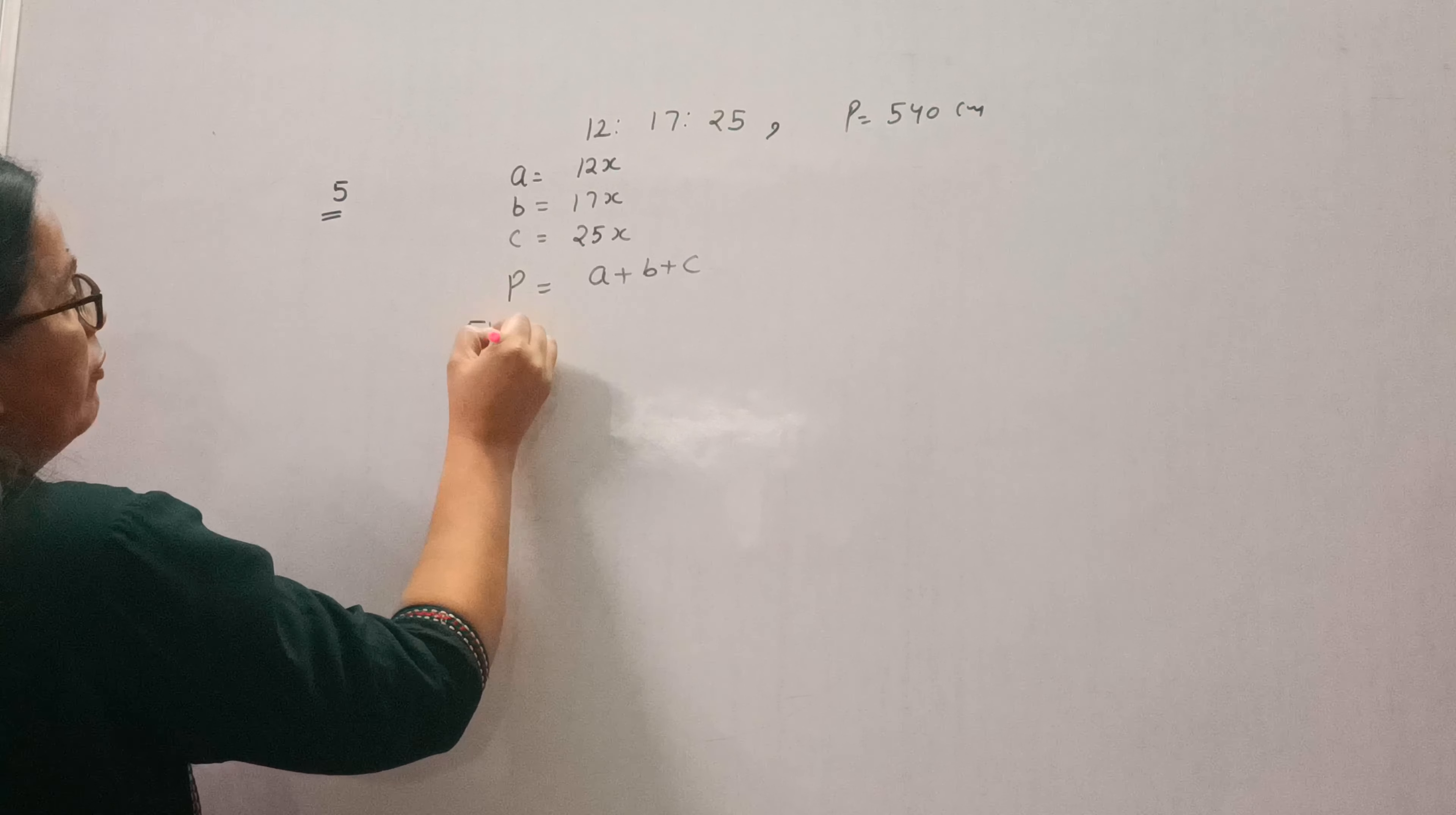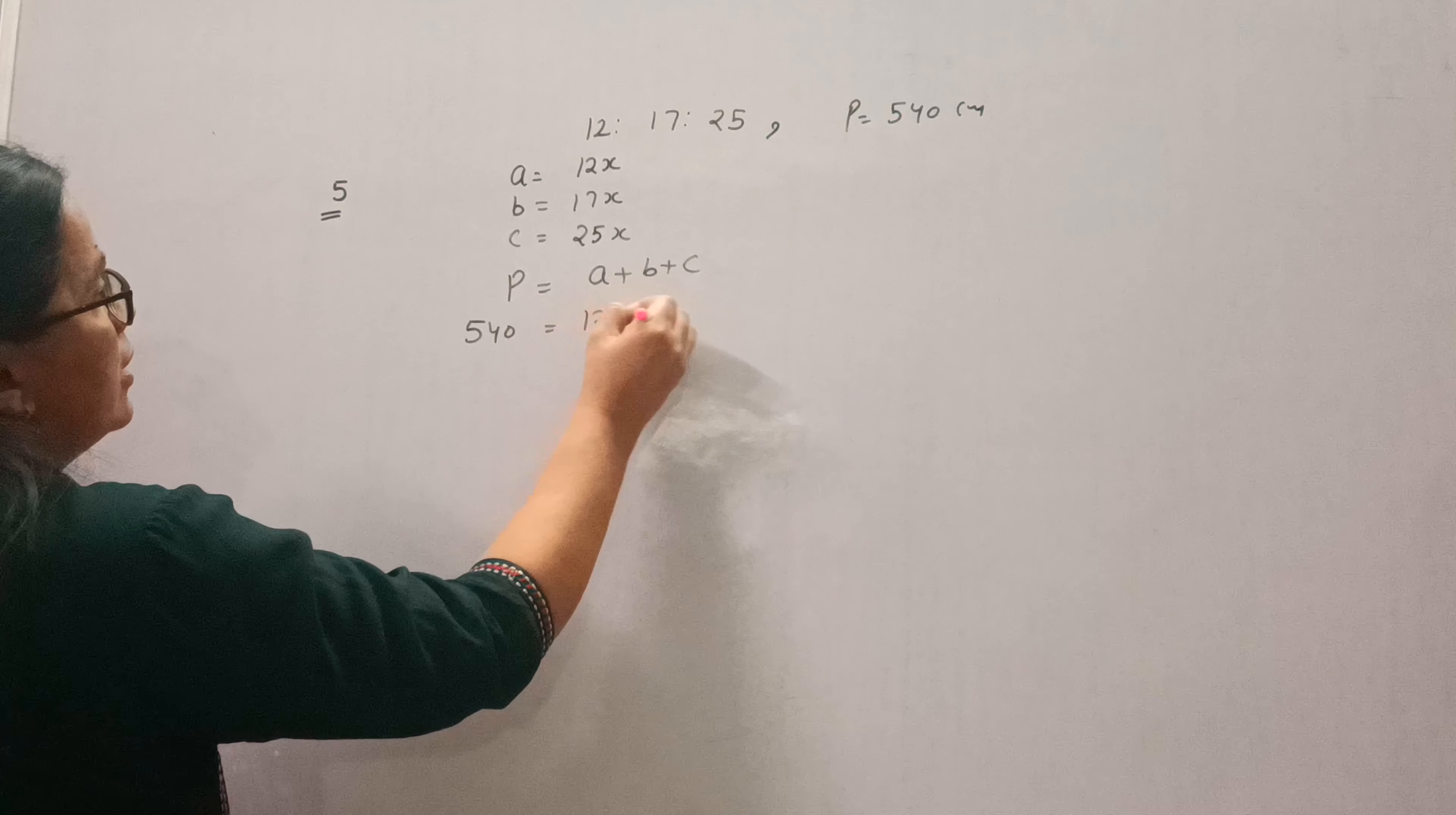So perimeter is 540, first side is 12x, second is 17x and third is 25x. So this will be 54x, so x will be 540 divided by 54, that means x is 10.